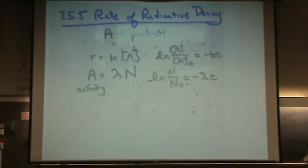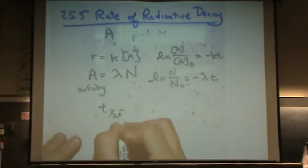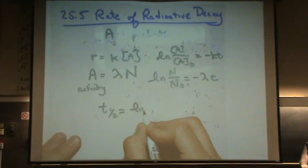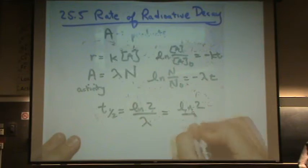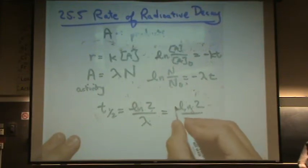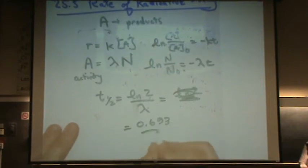And also let me write down the half-life formula. Half-life, which you saw before, is natural log 2 over K, is now going to be natural log 2 over lambda, which is 0.693 over lambda.